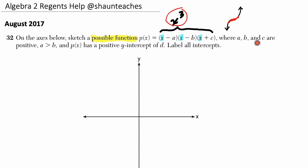It says where a and b and c are positive. Okay, so I have to remember that a, b, and c are positive. a is greater than b, and p of x has a positive y-intercept of d. Label all intercepts.